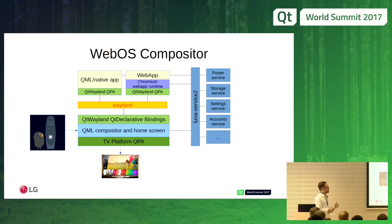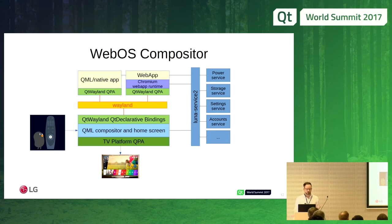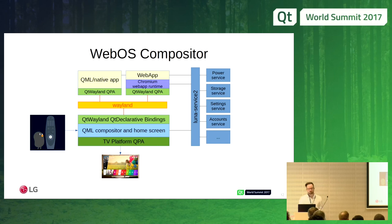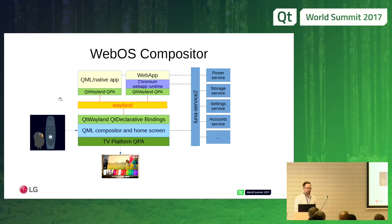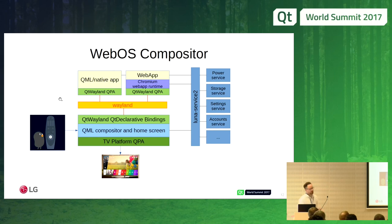In the WebOS compositor, everything — window management, launcher, home screen — is all in the compositor process. It is all just QML, and QML uses Wayland through Qt Wayland and QDeclarative bindings, so all Wayland objects just show up as QDeclarative items. On the application side, QML or native applications use Qt Wayland QPA, and web apps run on a Chromium runtime which also uses Qt Wayland QPA.